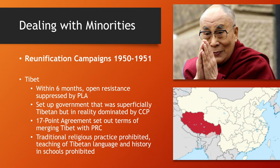They banned traditional religious practice within that area and banned the Tibetan language and history in schools, making Mandarin or Pinyin the official language. This weakened a belief system that was a rival to communism, suppressing specifically religious opposition.